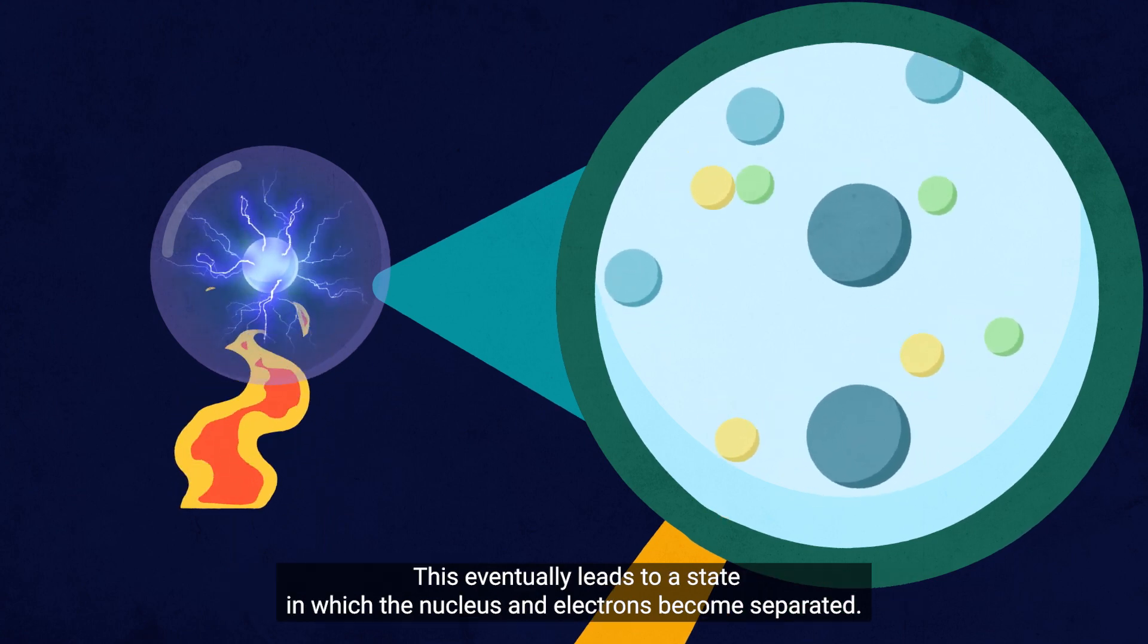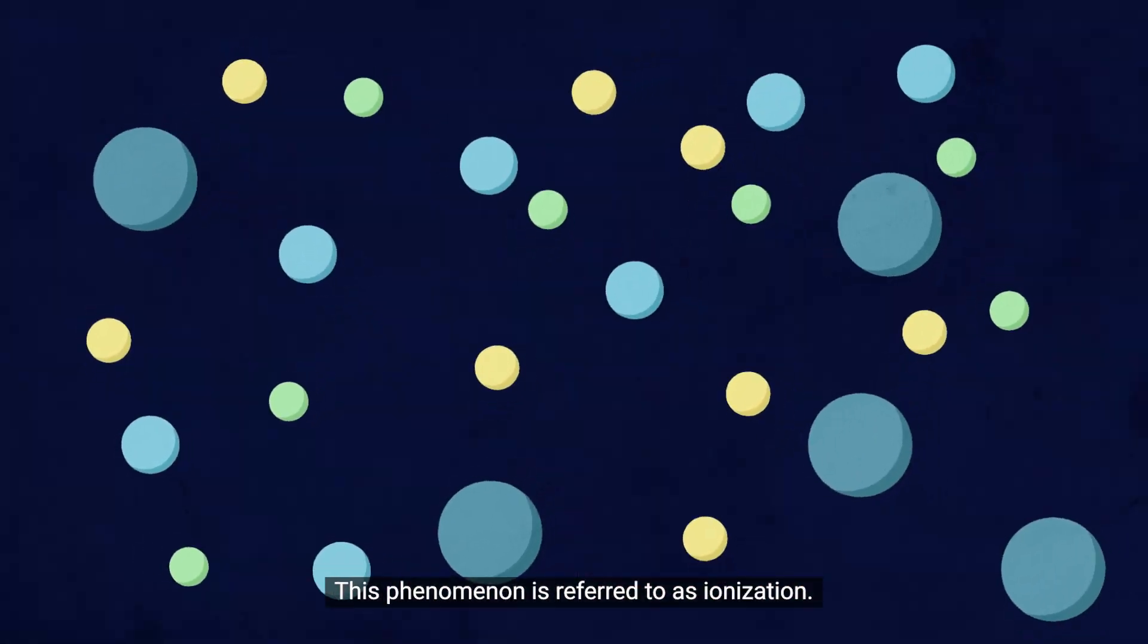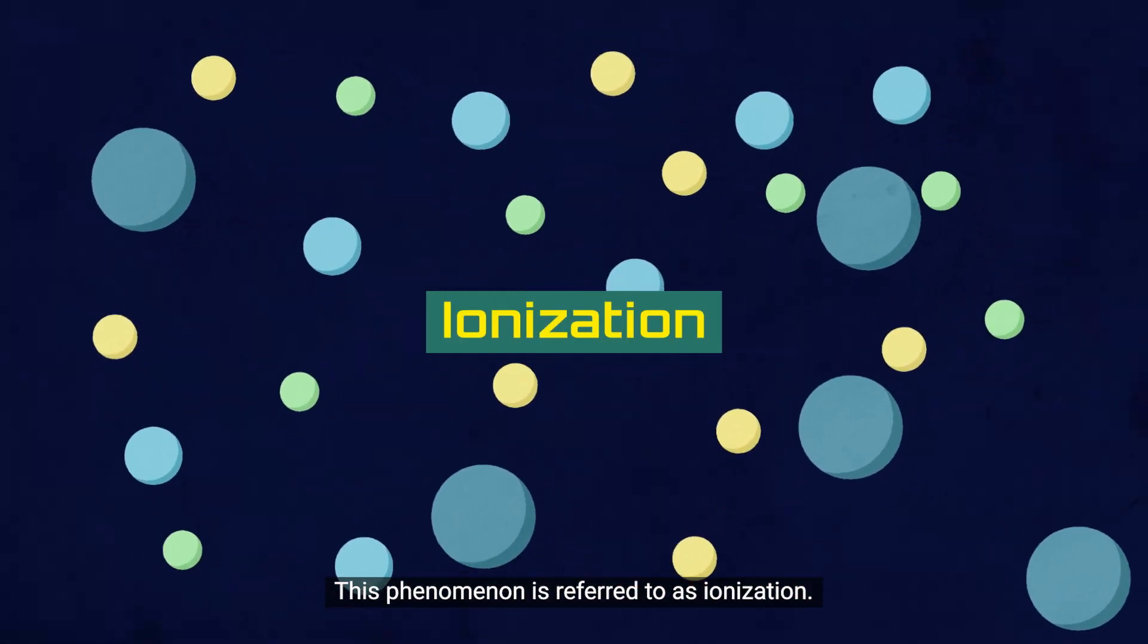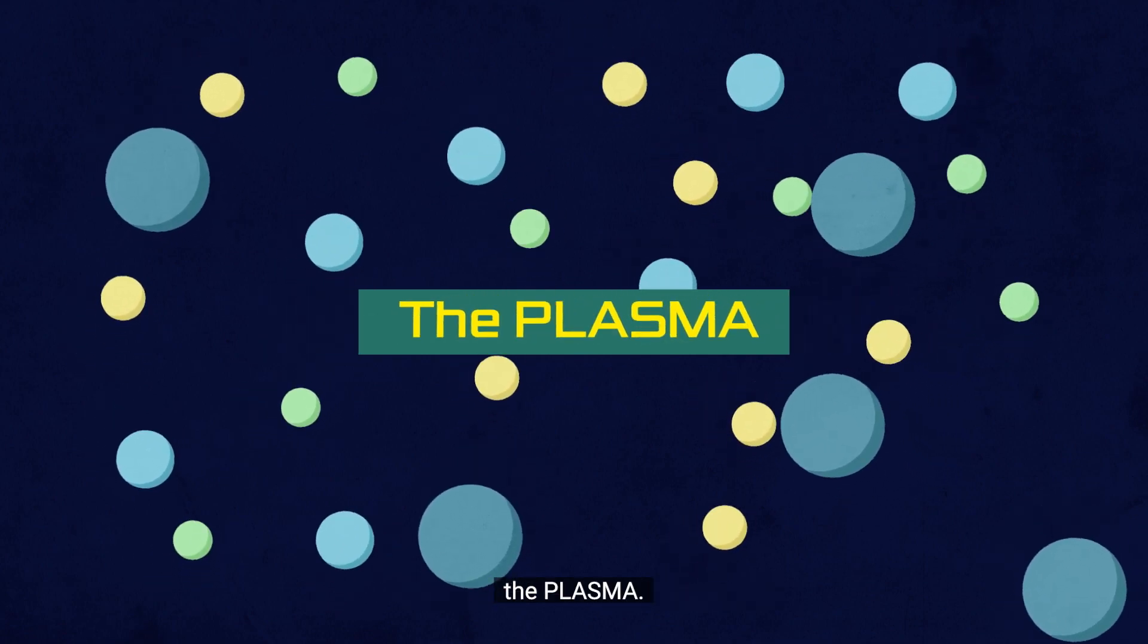This eventually leads to a state in which the nucleus and electrons become separated. This phenomenon is referred to as ionization, or we call it the fourth state of matter: the plasma.